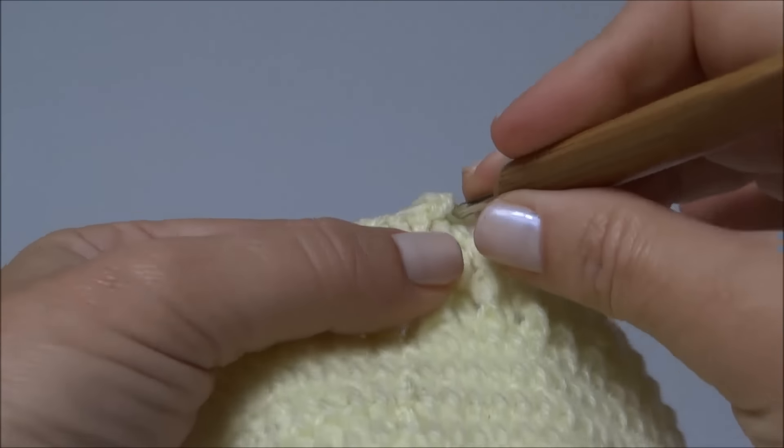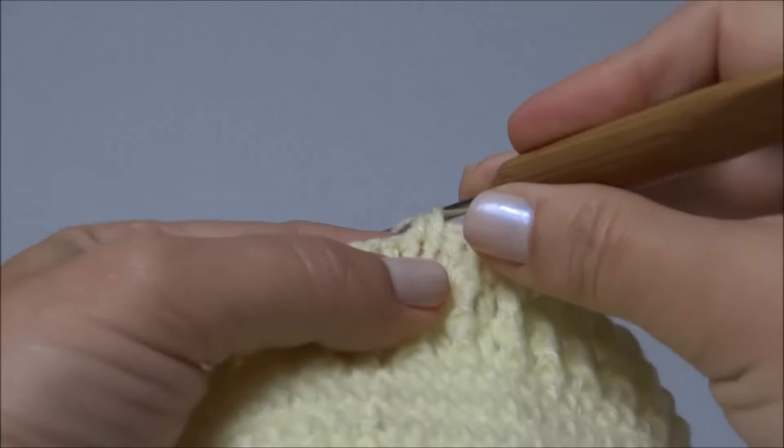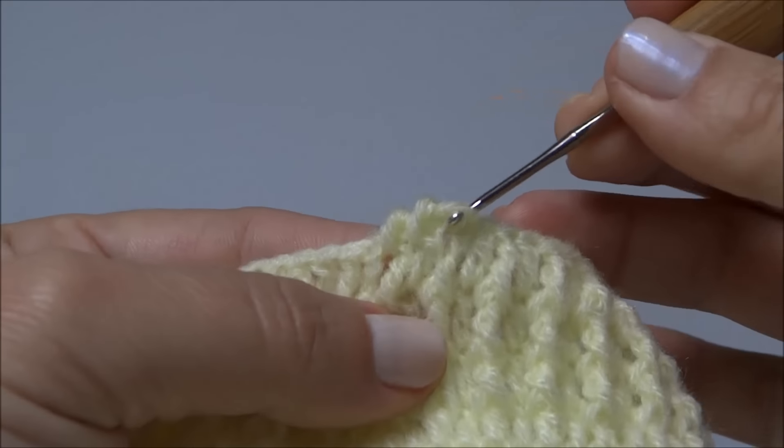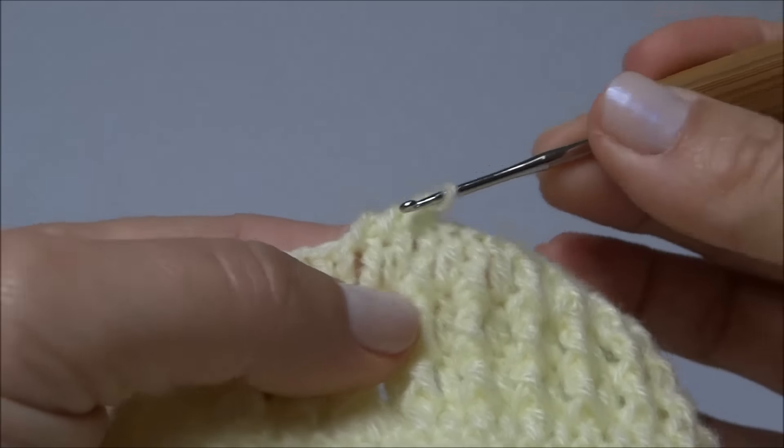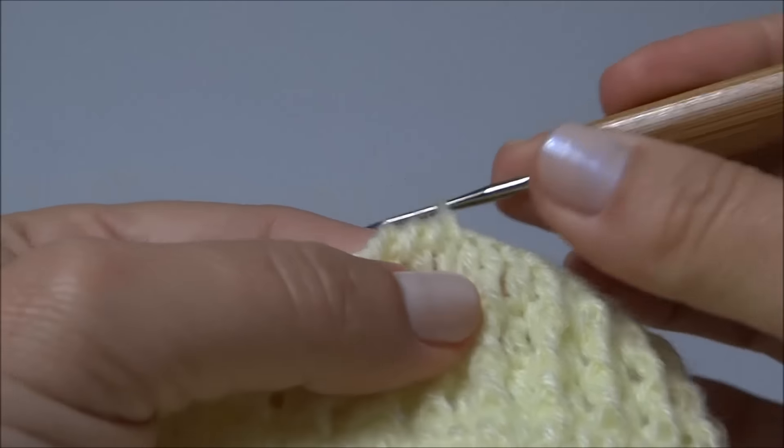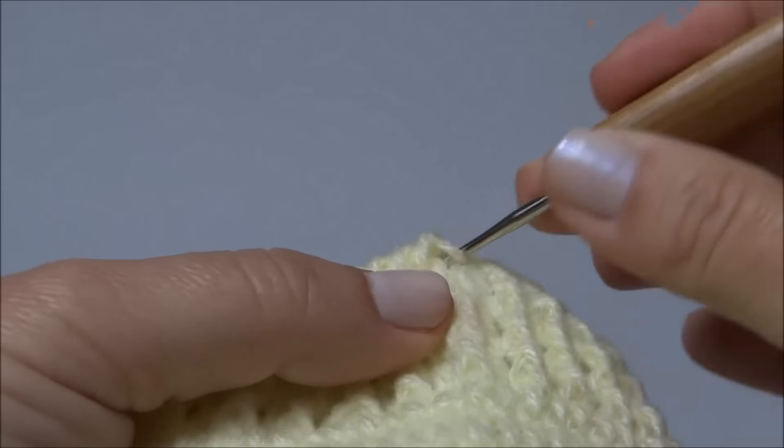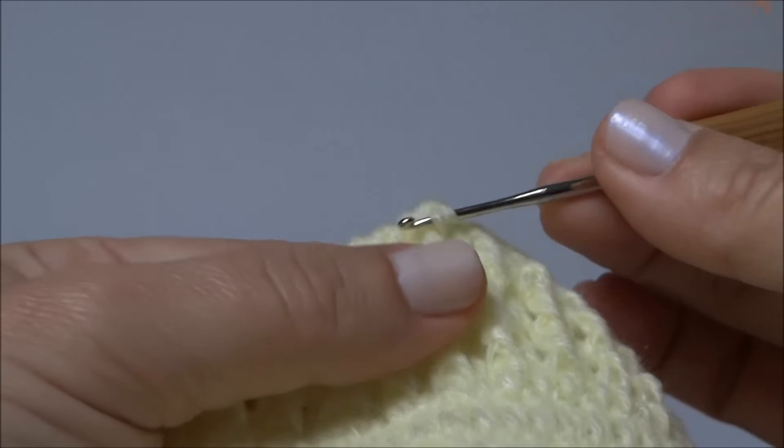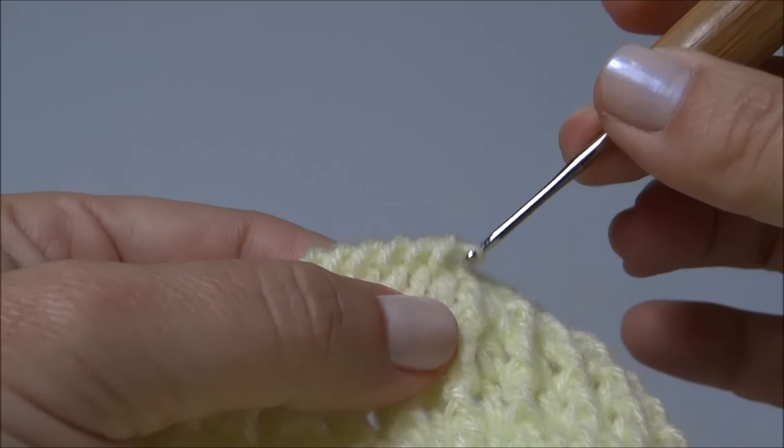Vou lá no ponto anterior, puxo a laçada e prendo. E assim vamos trabalhando ponto a ponto até dar a volta em toda a base do gorro. Eu vou voltar com a base finalizada e vamos começar o acabamento enfeitando o nosso gorro.